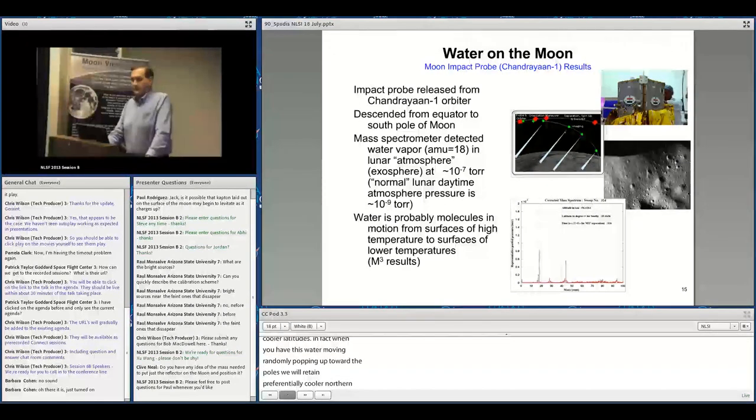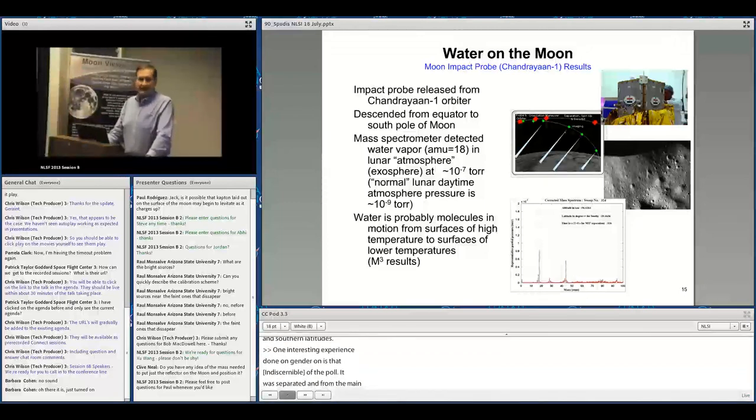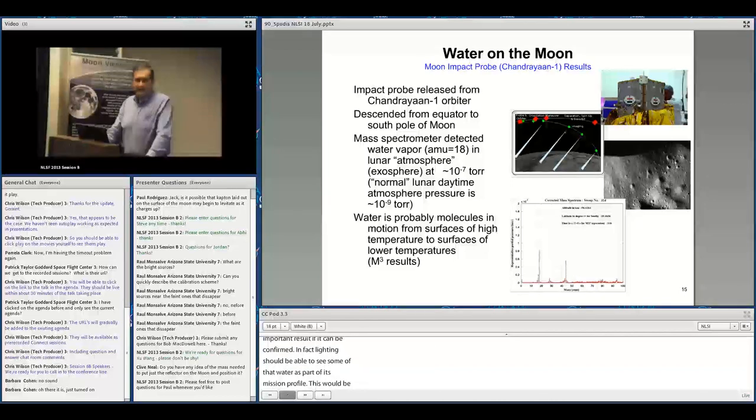Chandrayaan's Moon Impact Probe separated and deorbited at the equator, impacting near the south pole. Around 80 degrees latitude, a mass spectrometer detected a water spike, about two orders of magnitude greater than at equatorial regions. Their interpretation was the probe flew through an exospheric cloud of water. This is very important if confirmed—LADEE should be able to see exospheric water as part of its mission profile.